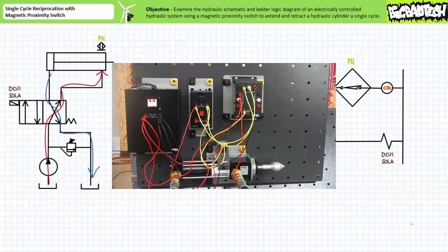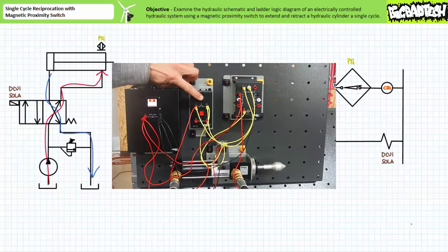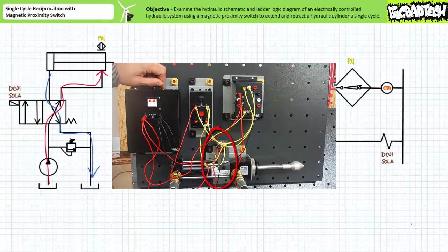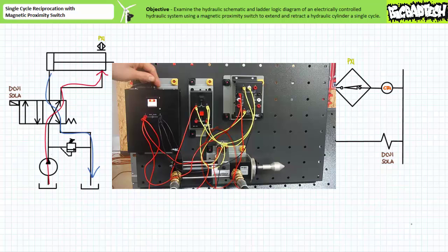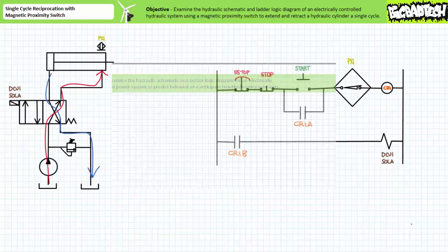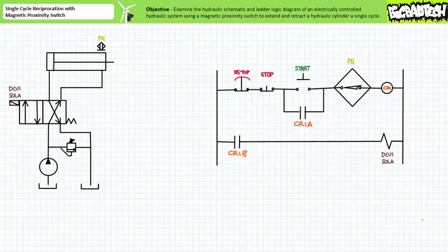Here's a short clip showing what a functional system might look like during regular operation. Again the only real difference between this and our last example was the magnetic proximity switch versus the physical limit switch. I think this is a pretty cool application. If you're still with me, let's learn some more.